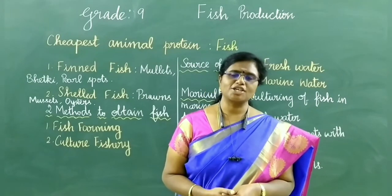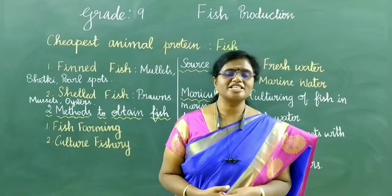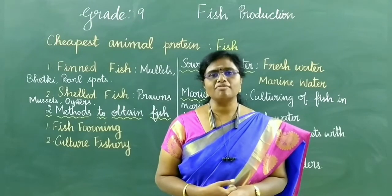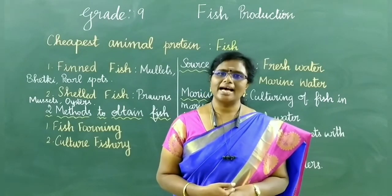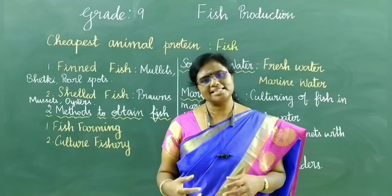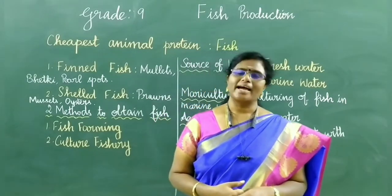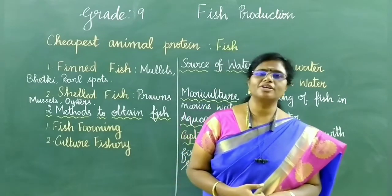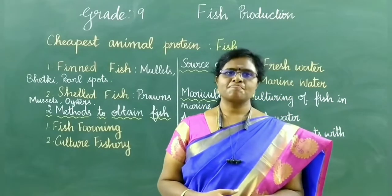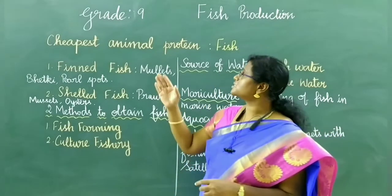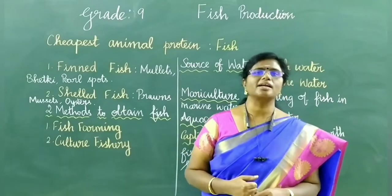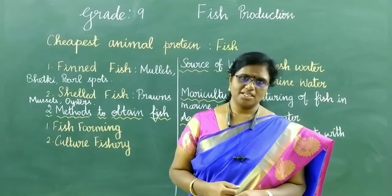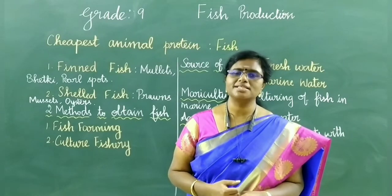Let us go on to the next topic: fish production. This topic comes under improvement of food resources. After that we will see about beekeeping and then have a revision. Today we are going to see about fish farming. Fish is the cheapest source of animal protein.